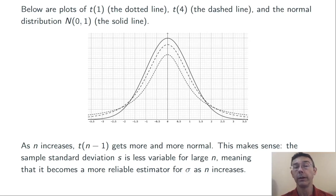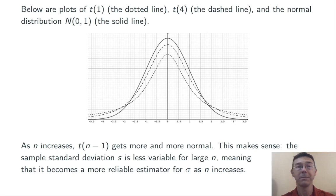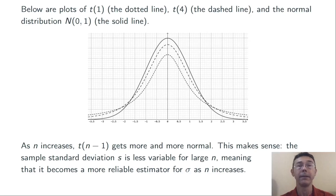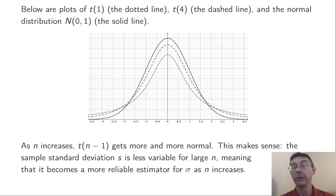Here's a plot that shows t(1), t(4), and the standard normal distribution. You can graphically see that t(1) has the most spread — more probability towards the tails. t(4) has slightly less, and N(0,1), the standard normal distribution, has less still. It makes sense that there would be less variability in the t(n−1) distribution as n increases, because the sample standard deviation s is just going to be less variable for larger n, meaning it becomes a better estimator for the population standard deviation sigma.